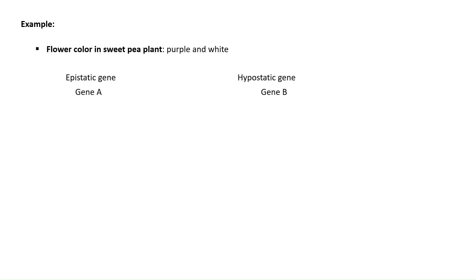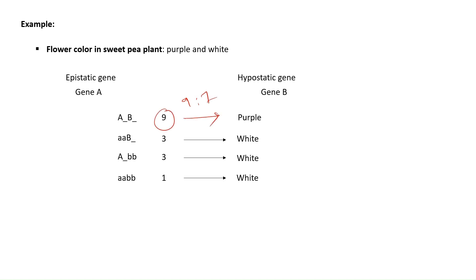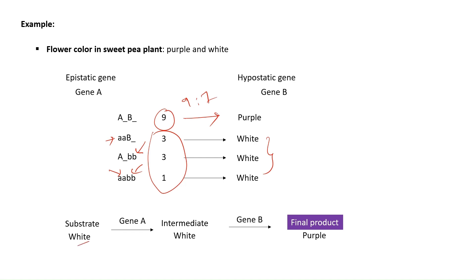The example for duplicate recessive epistasis is flower color in the sweet pea plant. Here, gene A is the epistatic gene and gene B is the hypostatic gene, and the ratio is 9:7. The 9 gives purple color and all 7 give white color — that is where the epistatic gene is recessive, the hypostatic gene is recessive, and both genes are recessive. There is a substrate which is white in color; gene A acts on it and converts it into an intermediary product, which is also white. Then gene B converts this intermediate product into the final purple-colored product.